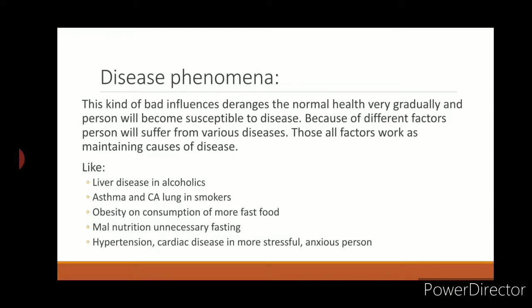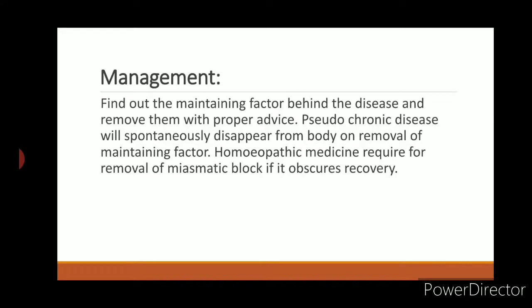Regarding phenomena: these bad influences gradually derange normal health and make a person susceptible to disease. All such factors work as maintaining causes of disease. Examples include liver disease in alcoholics, asthma and lung cancer in smokers, tuberculosis, obesity from excess fast food, malnutrition from unnecessary fasting or extreme diet programs, and hypertension or cardiac disease in highly stressed or anxious persons.